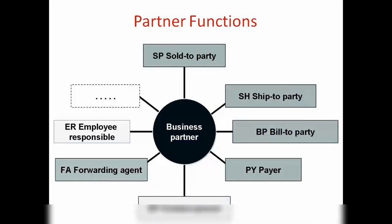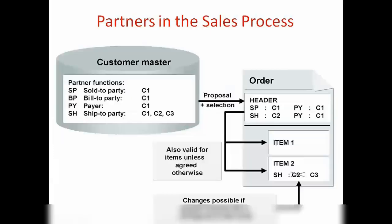For a business partner, we have partner functions like sold-to party, ship-to party, bill-to party, and payer. But you can also have a contact person, forwarding agent, employee responsible, or something not in the standard system — you can create your own and add it.